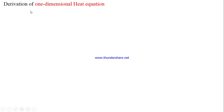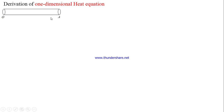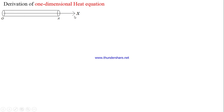In this lecture we will derive the one-dimensional heat equation. To derive this, let us consider a thin beam of heat conducting material OA, placed along the positive x direction with one end of the rod coinciding with the origin.